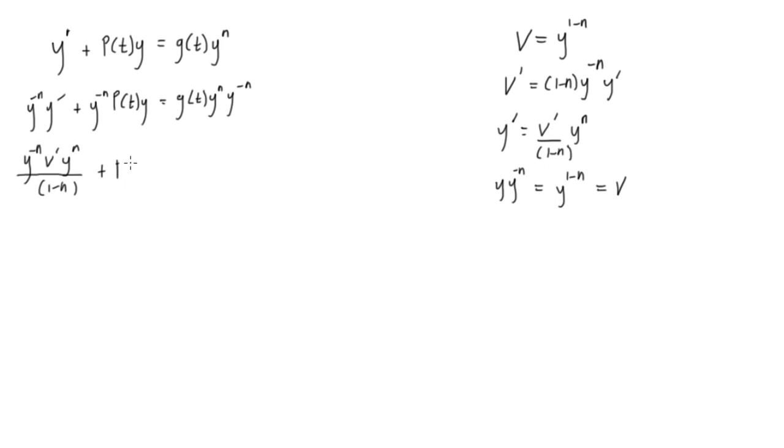So this is the same thing as p of t, and y to the power of 1 times y to the power of n minus 1 is the same thing as y to the power of 1 minus n. Okay, and then y to the power of n times y to the power of negative n, those cancel out, so we are left with just our original g of t.